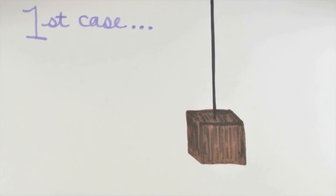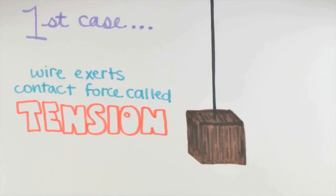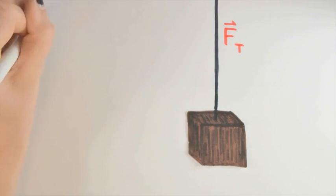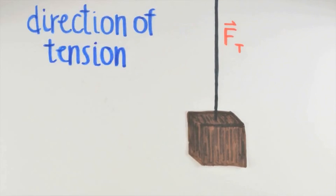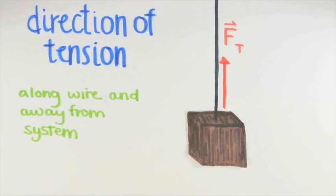If the wire is pulled taut, then the wire can exert a contact force we call tension on our system, which we'll label with the symbol Ft. First, let's discuss the direction of the tension force. Simply stated, the direction is along the wire, away from our system.